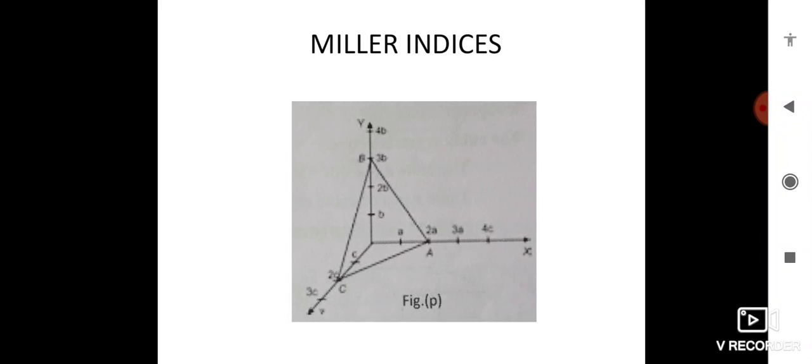Then take the LCM. This is the general condition. Then take LCM and multiply by the remaining coordinates. You will get Miller indices. For example, consider one example.